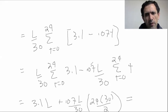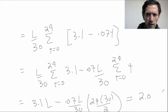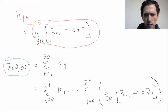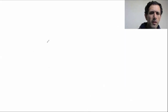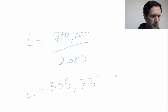For the second sum, factor out minus 0.07 over 30, then sum t from 0 to 29, which is 29 times 30 over 2. This simplifies to 2.085L. So the total is 3.1L minus 2.085L... wait, combining gives 2.085L equals 700,000. Dividing by 2.085 gives a loan amount of $335,731.41.